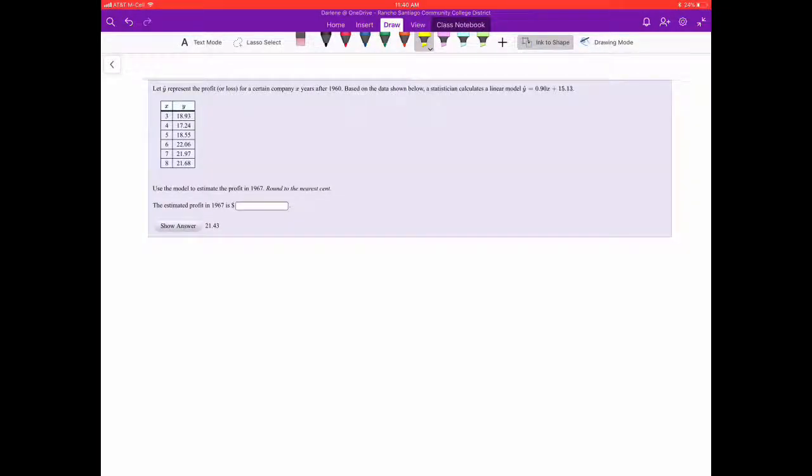In this example we look at a best fit line and predict a value using that best fit line. In this case we have a profit for a certain company X years after 1960. Based on the data shown below, the linear model is given to be Y-hat equals 0.90X plus 15.13. Use the model to estimate the profit in 1967 and round to the nearest cent.